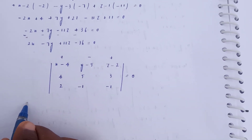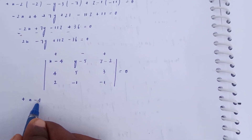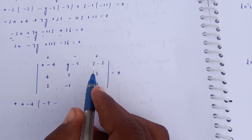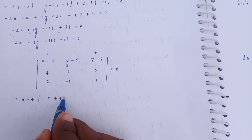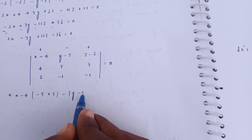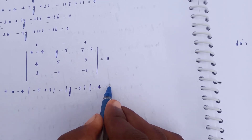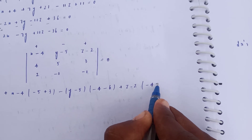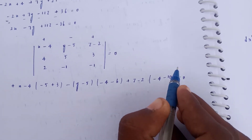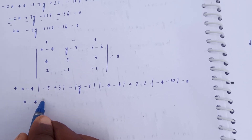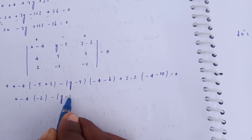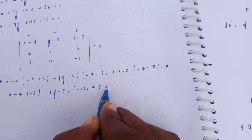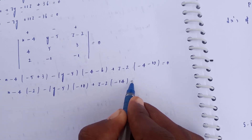For the second plane, using the second line point (4, 5, 2) with DRs (4, 5, 3) and PQ DRs (2, −1, −1): x−4 with (5×−1 − 3×−1) = −5+3 = −2, y−5 with (4×−1 − 3×2) = −4−6 = −10, z−2 with (4×−1 − 5×2) = −4−10 = −14. Setting equal to zero: −2(x−4) − 10(y−5) − 14(z−2) = 0.